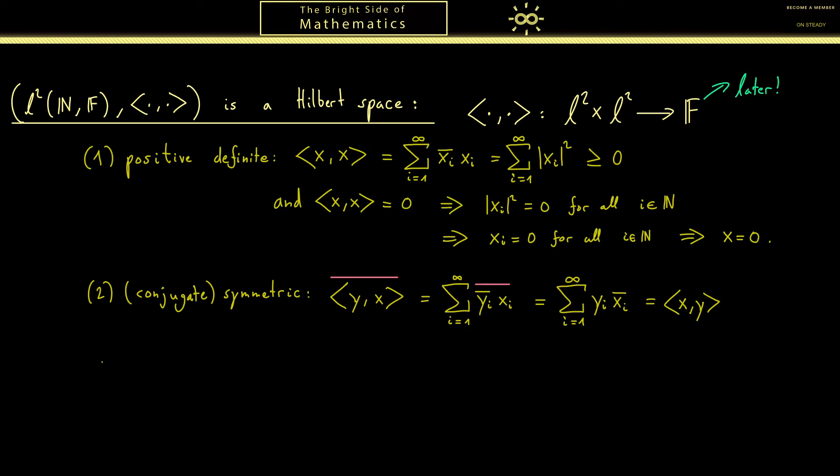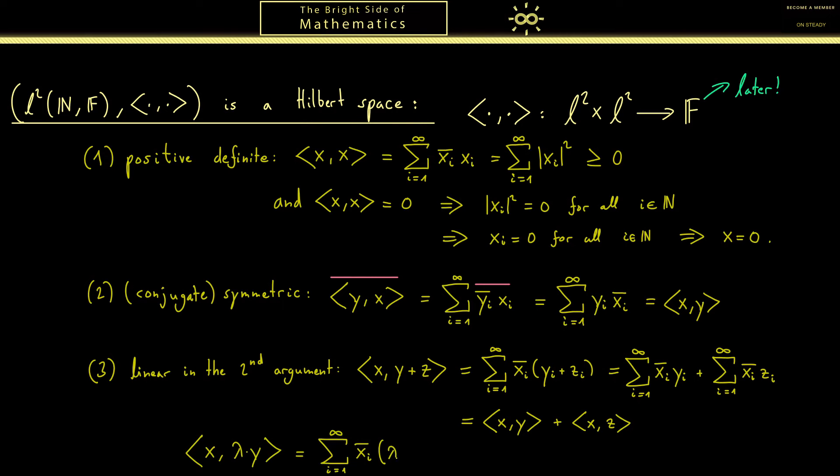And now the last part, the third part is the linearity in the second argument. So maybe that's already easy to see. But still, let's write it down. Since I don't want to get conflicts with the indices here, I use y and z as the two vectors in the second component. Now by definition, this is the inner product and we can write it as two series. And as you can see, this is simply the inner product with x and y and x and z. And now we can do the same for the homogeneous part. So we look at the inner product <x, λy>. Which is the series x_i bar λy_i. And there we can simply pull out the lambda factor. Which is then lambda times the inner product. And indeed, that's the linearity.